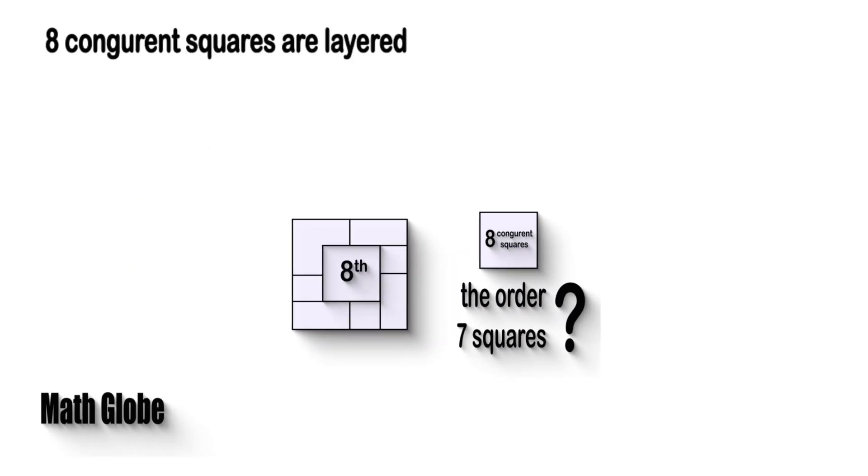Hi this is MathGlobe. Eight congruent squares are layered one on the top of the other.